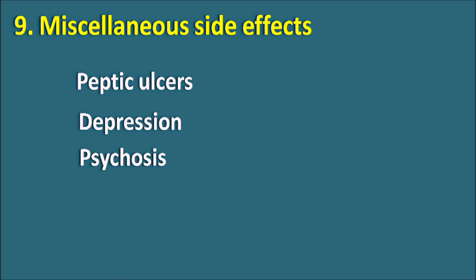H indicates hyperglycemia, O indicates osteoporosis, W indicates wasting, GC indicates glaucoma and cataract, and HERO indicates hirsutism, edema, retarded growth, and oral thrush. Hope you have enjoyed this video. If you like this video, please subscribe to our channel, share it with your friends, and post your comments in the comment box. Thank you for watching.